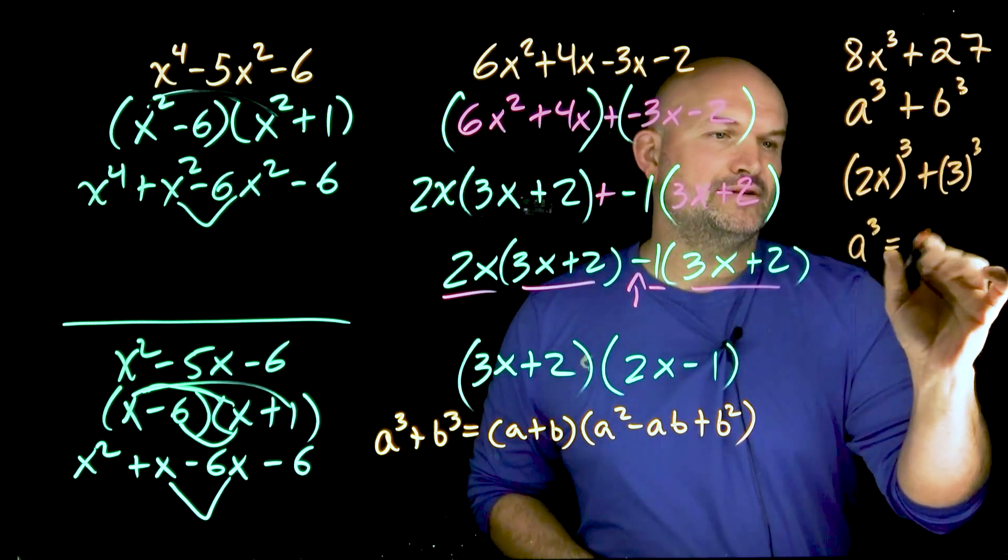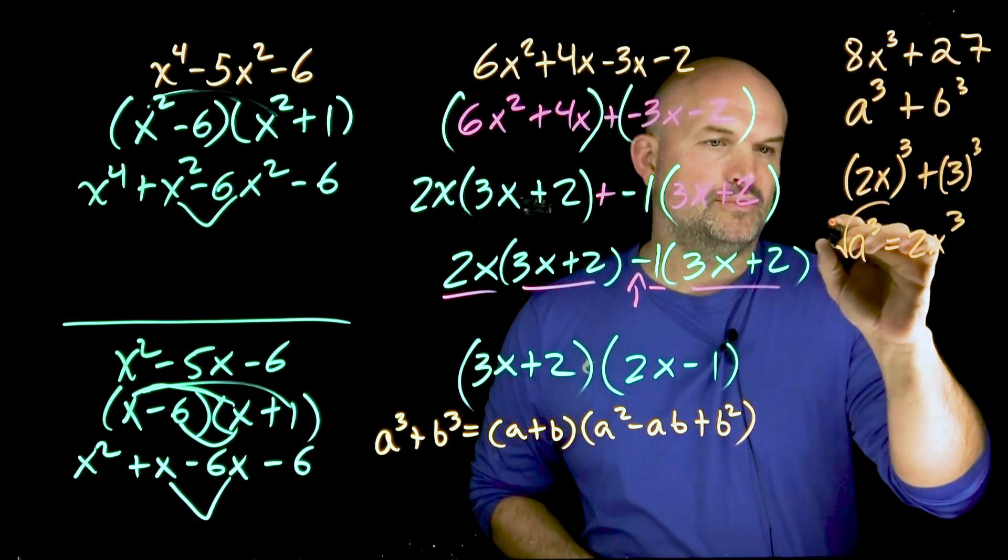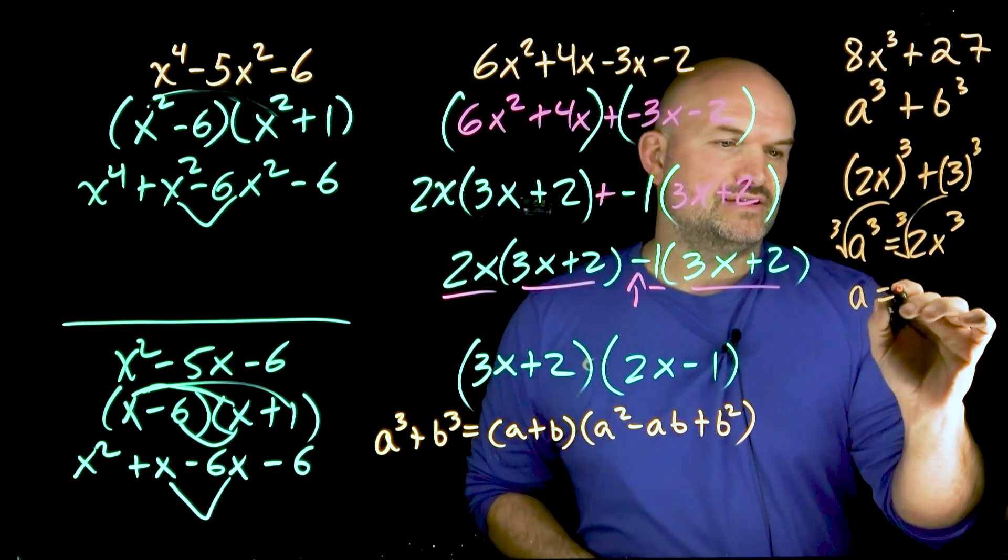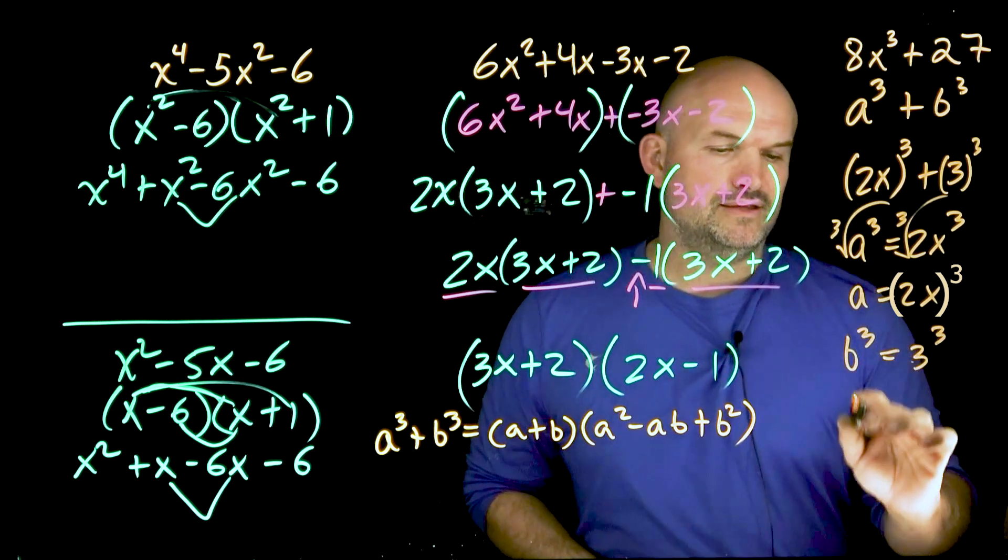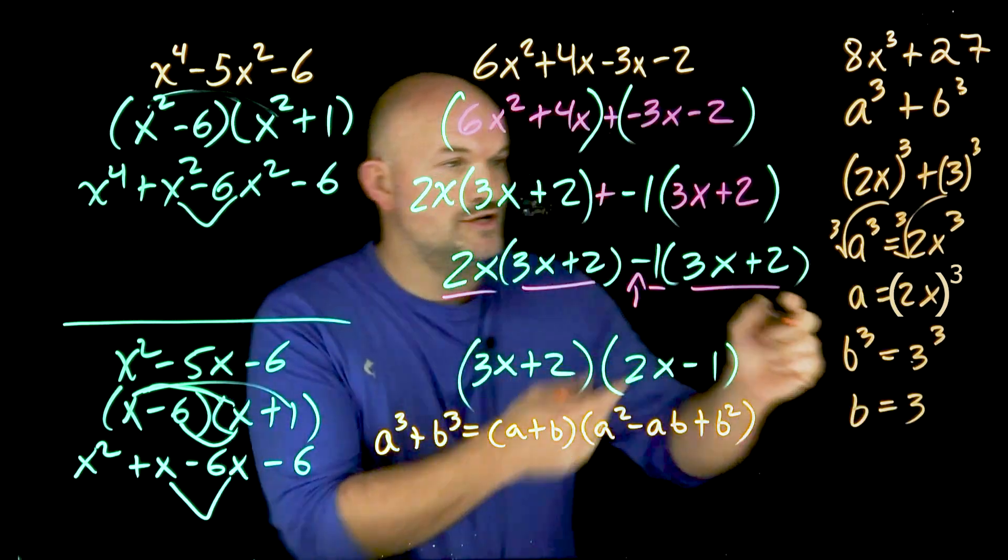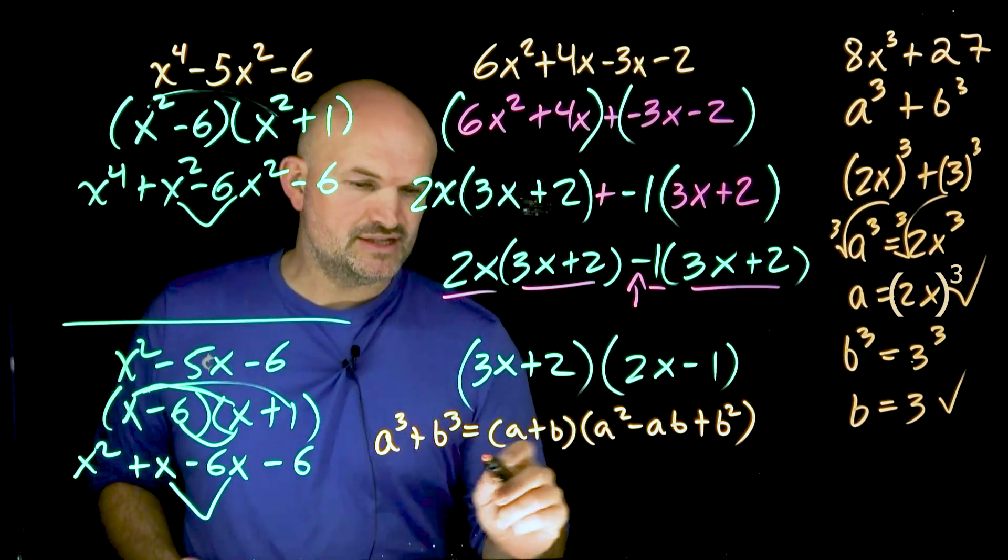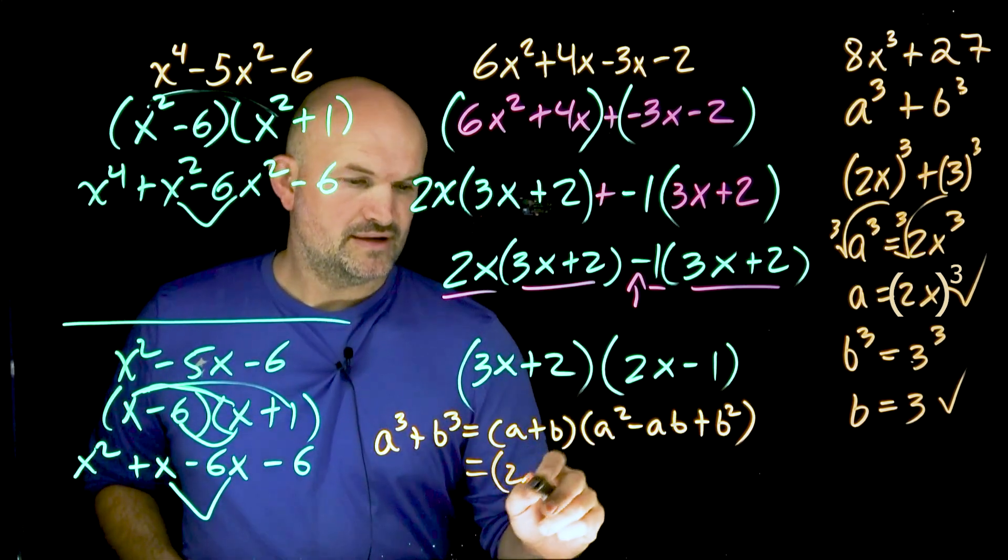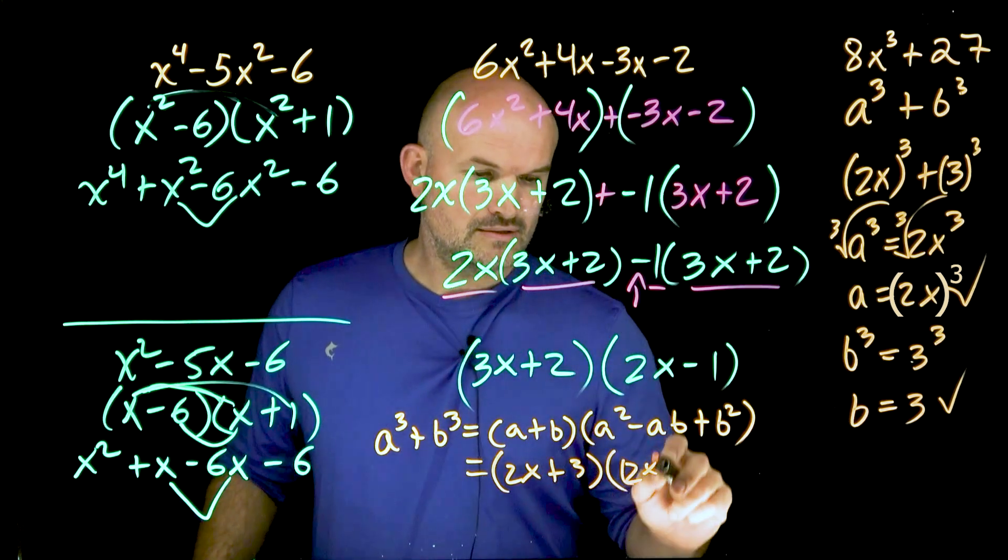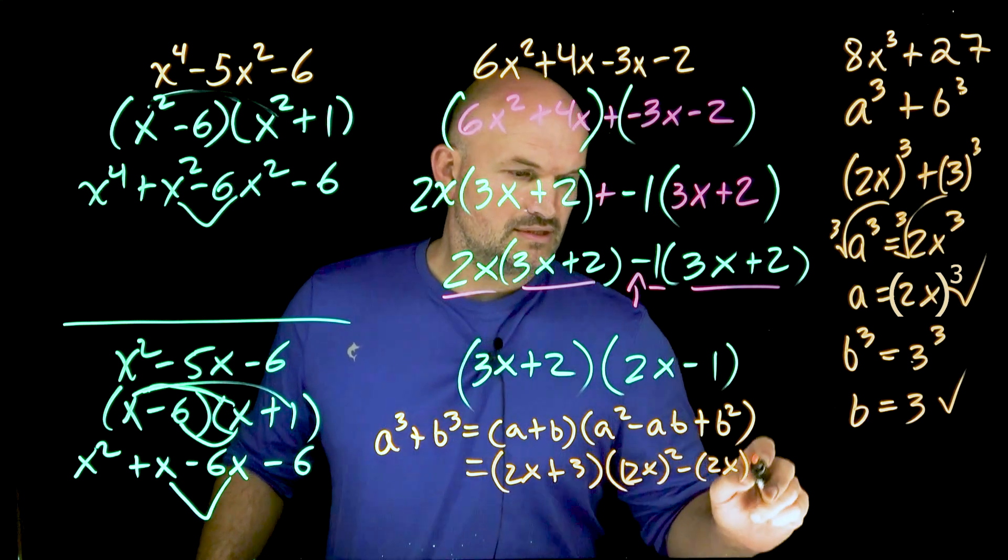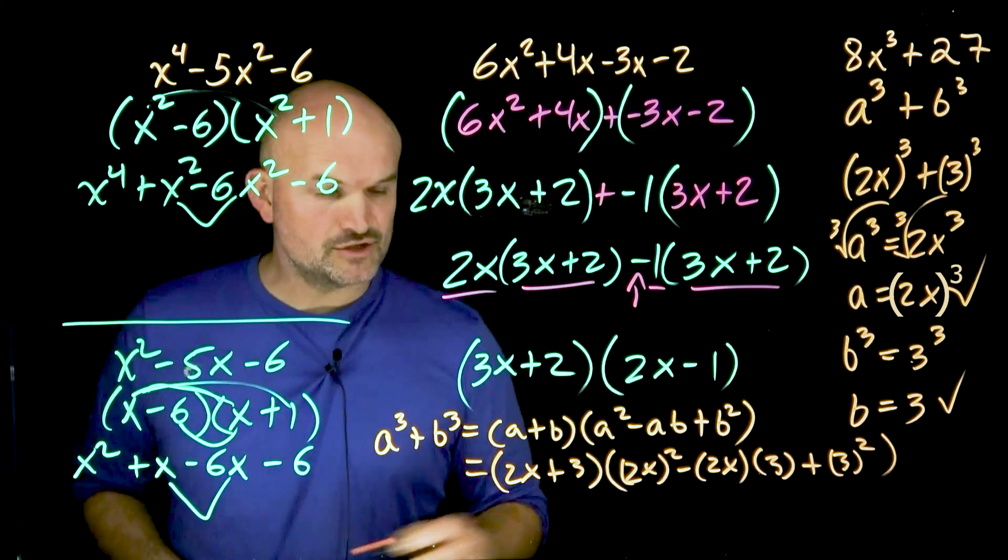So if a cubed is equal to 2x cubed, and if I want to be able to solve for a, we'll take the cube root of both sides. a is going to equal 2x. And if b cubed is equal to three cubed, then hopefully you recognize b is equal to three. So now if I know my value of a and I know my value of b, then all we're simply going to do is plug them into this formula. So 2x plus 3, and then we have 2x squared minus 2x times 3 plus 3 squared. Now let's go ahead and simplify.